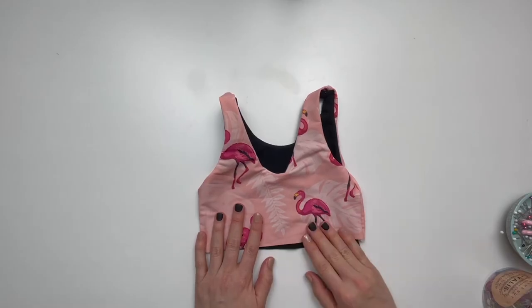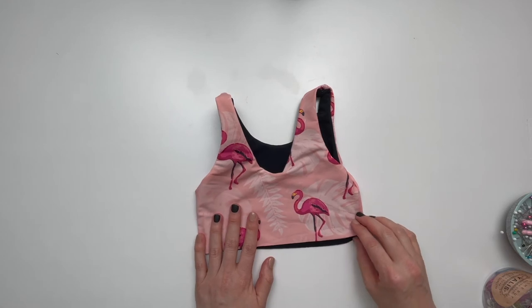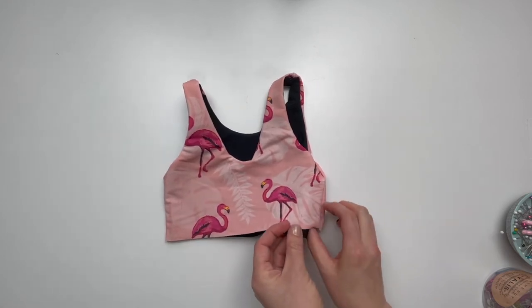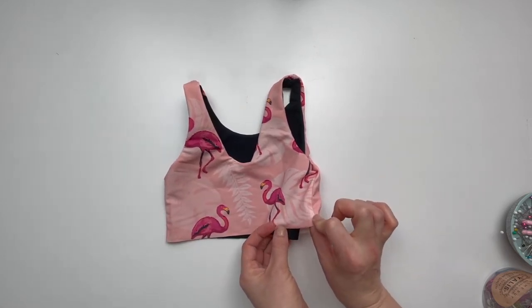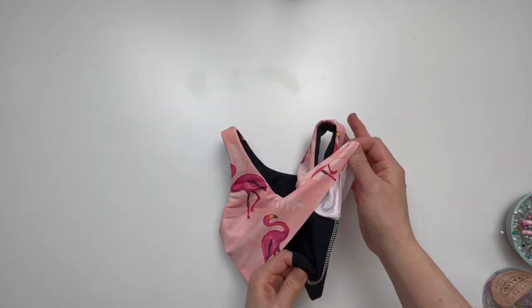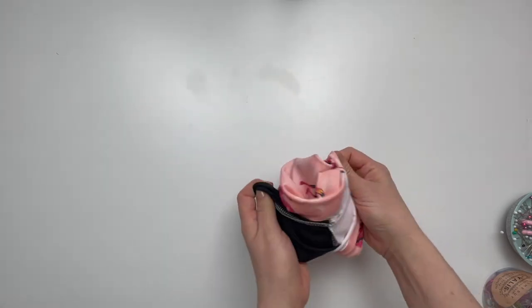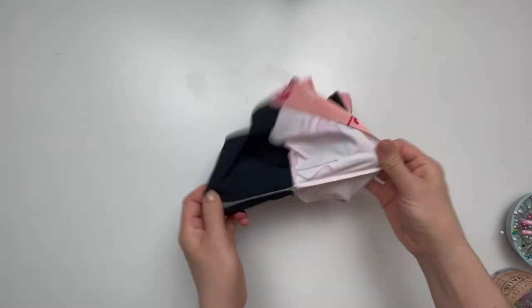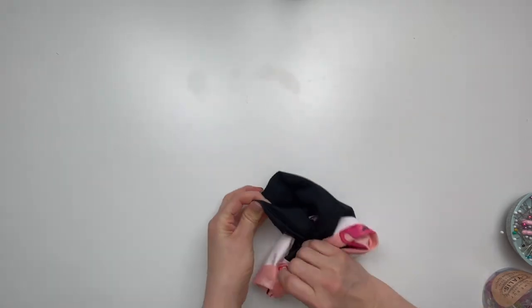To complete the reversible bodice, choose one side seam to start at. We need to match the main and lining fabric right sides together at this side seam. In order to do this, push all of the remaining bodice between those side seams. It may seem odd at first, but just go with it.